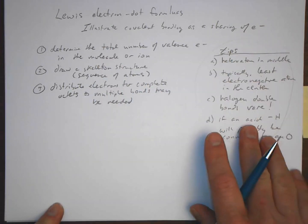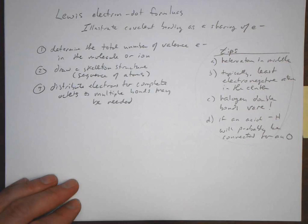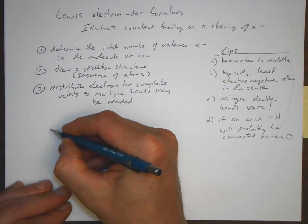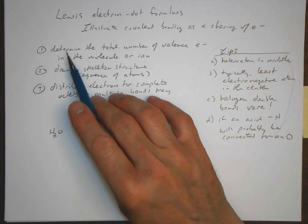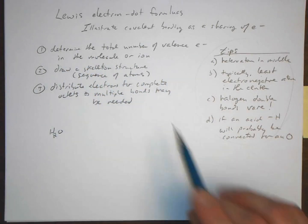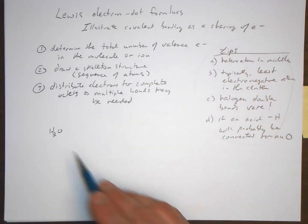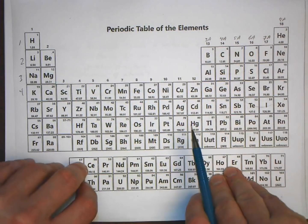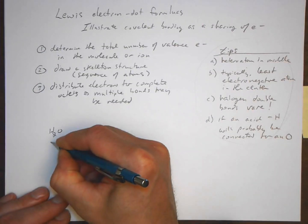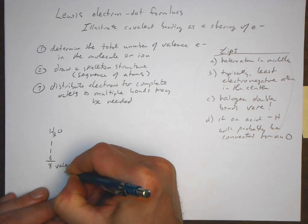Let's use these steps and tips to draw a few molecules. Let's start with something easy — the Lewis structure for water, H₂O. Our first job is to determine the total number of valence electrons. There are two hydrogens, each with one valence electron, and oxygen has six valence electrons. So we have one plus one plus six equals eight valence electrons total.